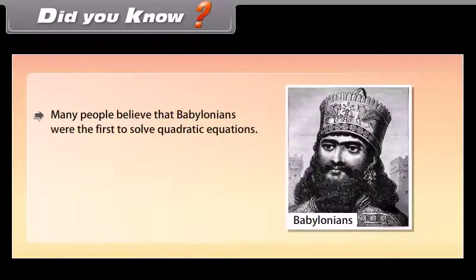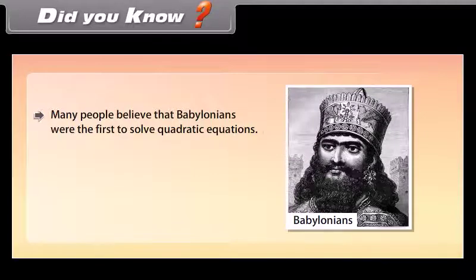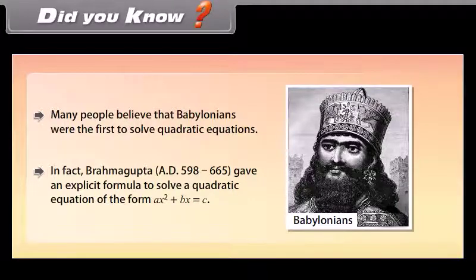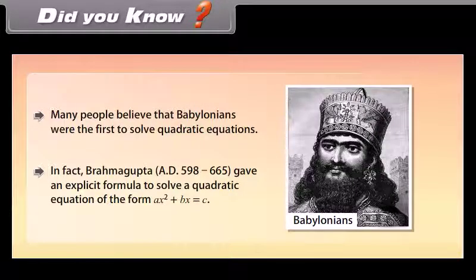Many people believe that the Babylonians were the first to solve quadratic equations. In fact, Brahmagupta (AD 598–665) gave an explicit formula to solve a quadratic equation of the form ax² + bx = c.